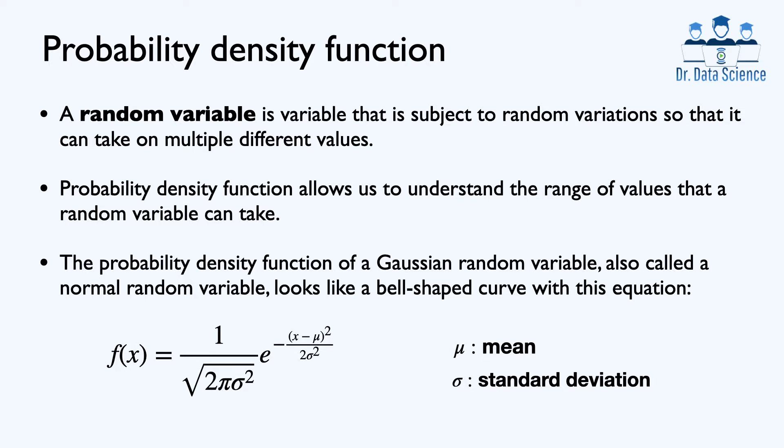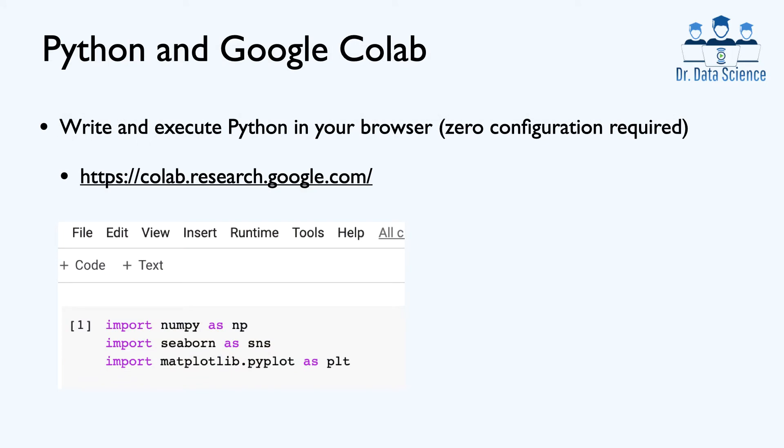This equation is complicated and not really easy to understand, so the goal is to show you how we can use Python to visualize this distribution and understand what the mean and standard deviation parameters look like. You don't have to install Python on your own computer — you can simply use Google Colaboratory, which allows you to write and execute Python just in your browser without any configuration.